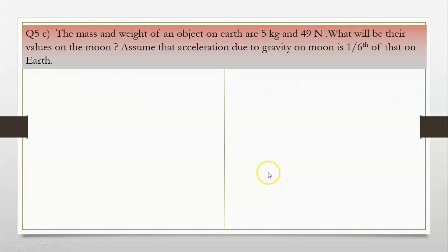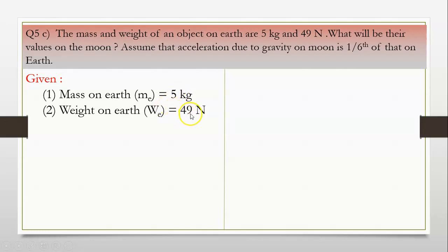Now, the next sum 5c. The mass and weight of an object on Earth are 5 kilogram and 49 newtons. What will be their values on the moon? Assume that acceleration due to gravity on moon is 1 sixth of that on Earth. So we start with given. What is given? Mass on Earth, that is ME is equal to 5 kg. Weight on Earth, WE is equal to 49 newton.